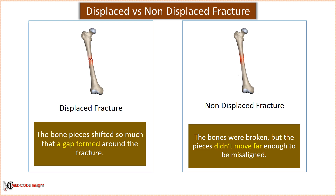A displaced fracture means the pieces of the bone moved so much that a gap is formed around the fracture site. A non-displaced fracture means the bones are still broken but the pieces did not move far enough to be misaligned.